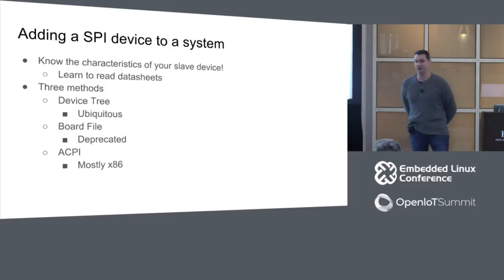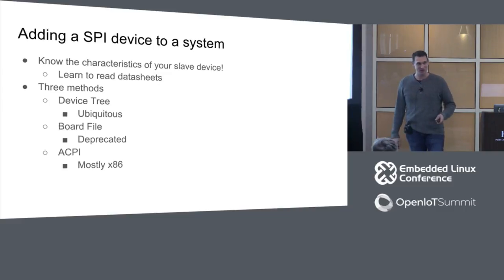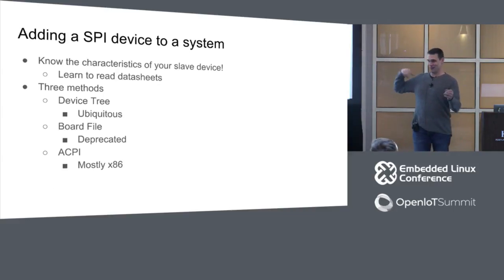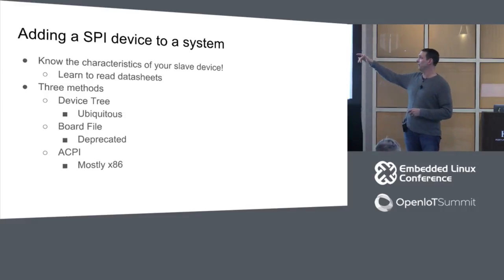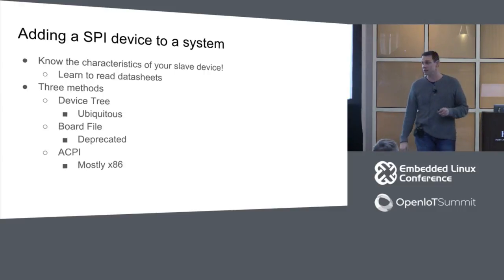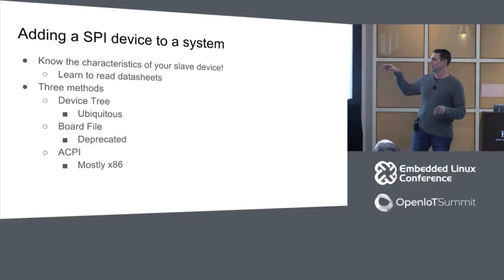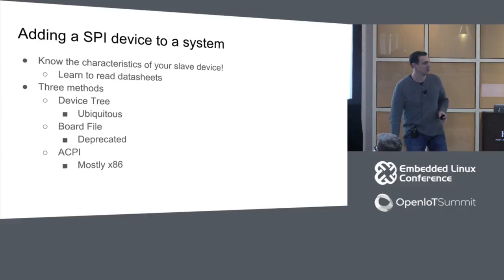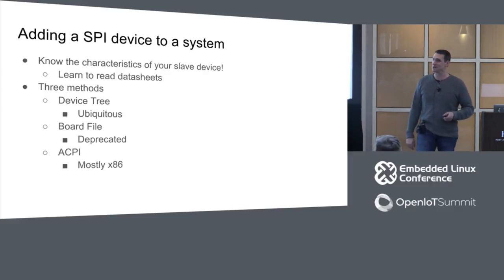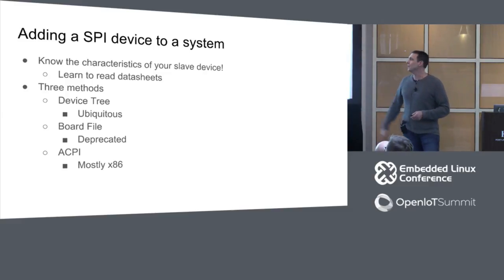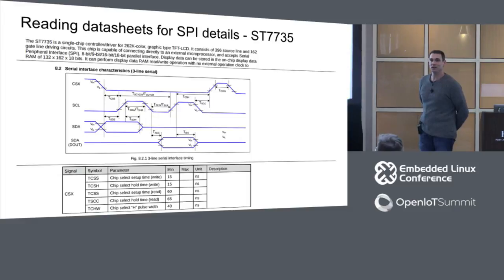Let's jump into adding an SPI device to your system. The first thing is learning how to read data sheets, because a lot of people can't seem to do that. There are three methods to hook up a protocol driver: the ubiquitous device tree method that most of you will use, the board file method which some systems still use especially on old vendor trees, and ACPI which you'll see mostly on x86 and vendor kernels.